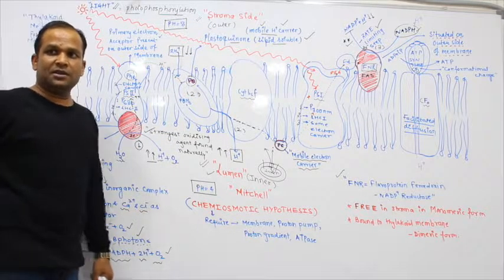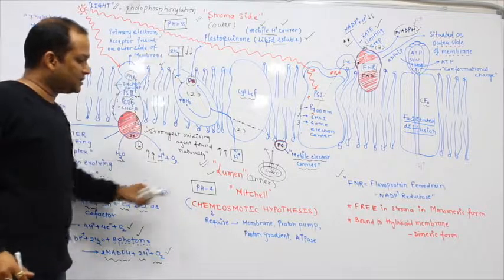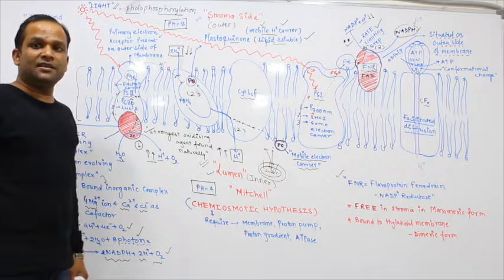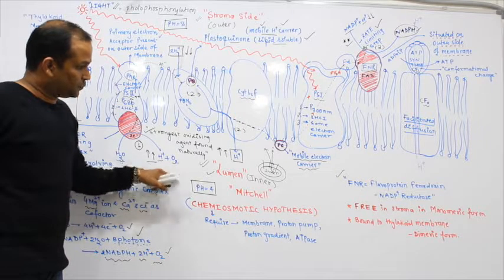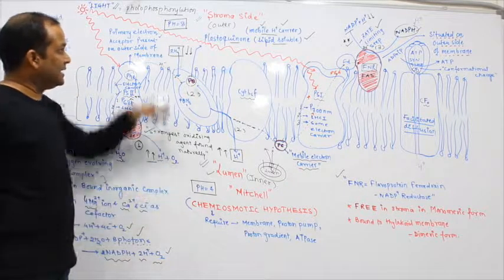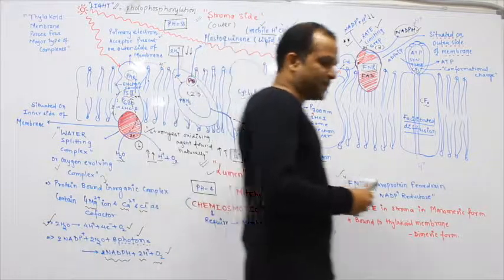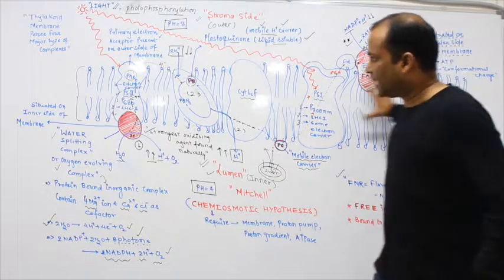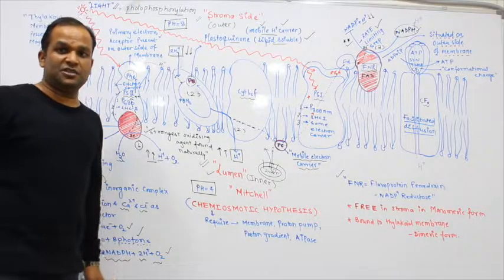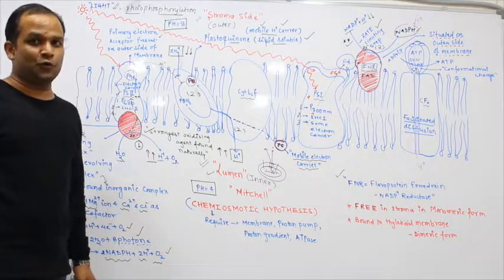There is a vast difference in pH - 10,000 times increase in proton inside the lumen compared to the stroma side. The thylakoid membrane is especially impermeable to these protons.